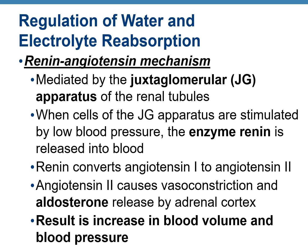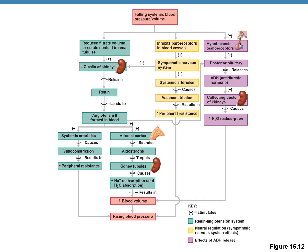The regulation of water and electrolyte reabsorption is controlled by the renin-angiotensin mechanism, mainly governed by the juxtaglomerular apparatus in the kidneys. When blood pressure falls, the juxtaglomerular apparatus cells release the enzyme renin into the blood. Renin converts angiotensin 1 to angiotensin 2, which has two effects: it causes vasoconstriction and it triggers the release of aldosterone. Aldosterone causes kidney cells to reabsorb more water and sodium ions, increasing blood volume and consequently raising blood pressure. This figure summarizes the regulation.